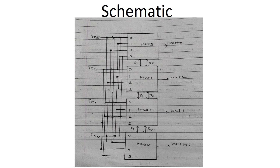Now let me give you one simple example. If the input combination is 0,0, meaning select line S1 is 0 and S0 is 0, definitely this multiplexer will be activated at its initial state. Output O3 will be connected to line number 0, and line number 0 is connected with IN3. So the operation table is satisfied. Similarly O2 is connected with IN2, O1 is connected with IN1, and O0 is connected with IN0.